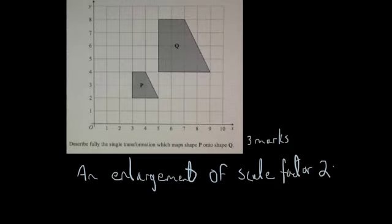OK, so the single transformation which I would do to get P onto Q would be an enlargement of scale factor 2. And that's for my three marks. So the question is have I made a mistake and if so can you spot it and correct it?